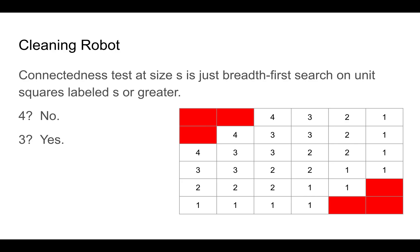So connectedness first. For connectedness, we just perform a breadth first search on the unit squares labeled s or greater. So for our example, the unit squares labeled four are not connected orthogonally. They're connected diagonally, but we're not allowing the robot to move diagonally. On the other hand, size three is connected orthogonally, as are all smaller sizes.